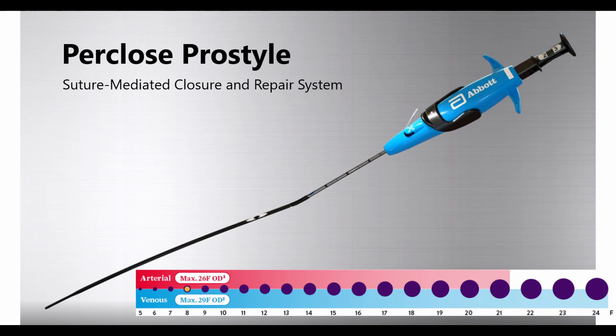Perclose is indicated for closure of femoral arterial access from 5 French to 21 French, but over 8 French you need to use two devices and the pre-close technique. It's indicated for femoral venous from 5 French to 24 French, and over 14 French you need to use two devices and the pre-close technique.